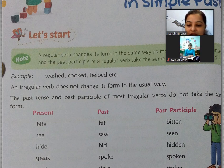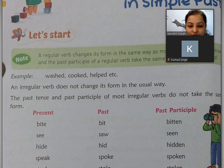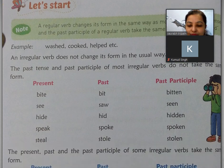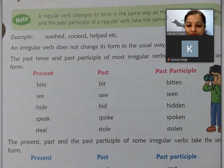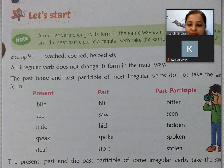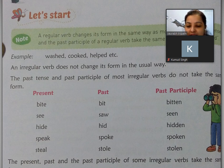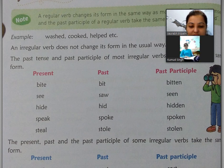An irregular verb does not change its form in the usual way. Yeh apne form ko usually change nahi karte hain. The past tense and past participle of most irregular verbs do not take the same form. Past participle aur past tense jo hota hai irregular verbs mein, woh same form mein nahi rehte. Yahan present di hai, phir past, phir past participle — yeh first, second, third form hoti hai.